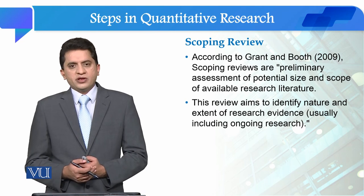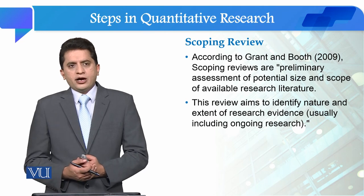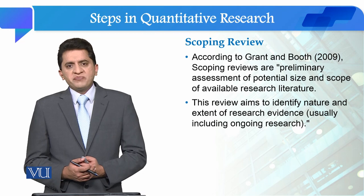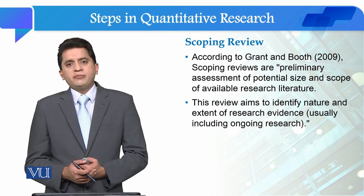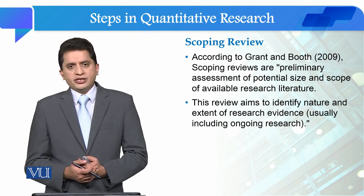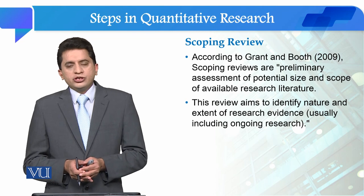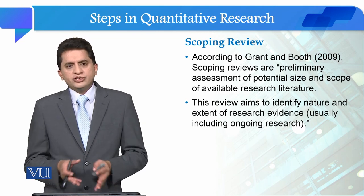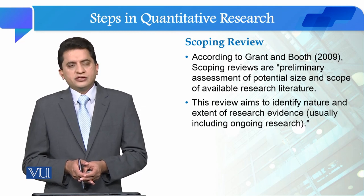When you are doing a systematic literature review, you have a potential research question and a well-defined need for conducting it. But in the case of a scoping review, you have an emerging social situation and you want to see the academic output of the intellectual community — how the academic community is responding to that emerging situation. This review aims to identify the nature and extent of research evidence, usually including ongoing research.